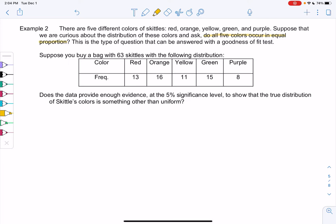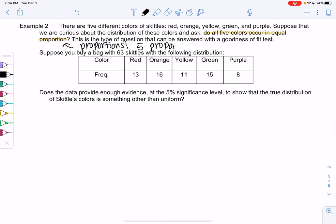So this can be answered with goodness of fit. And that's because we're looking at proportions. We have five proportions, not just one, so that's why we have to use goodness of fit. We're going to buy a bag of Skittles with 63 Skittles as our sample and take note of each color.